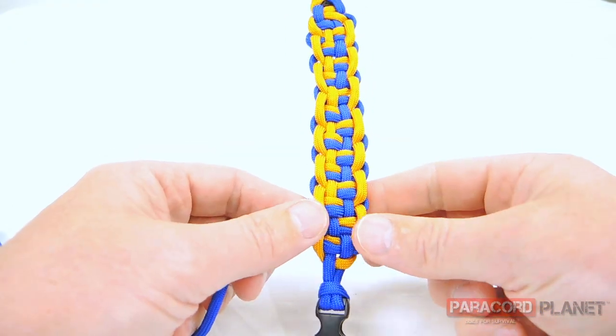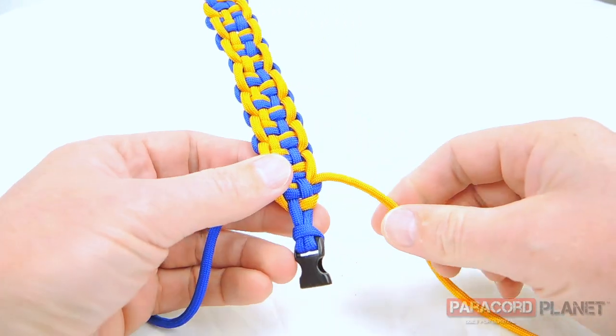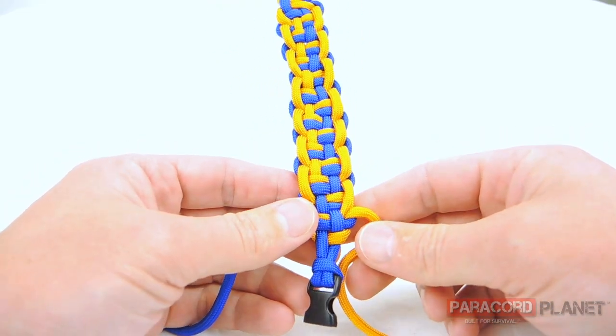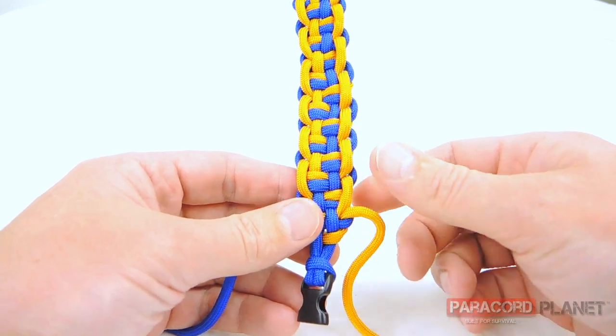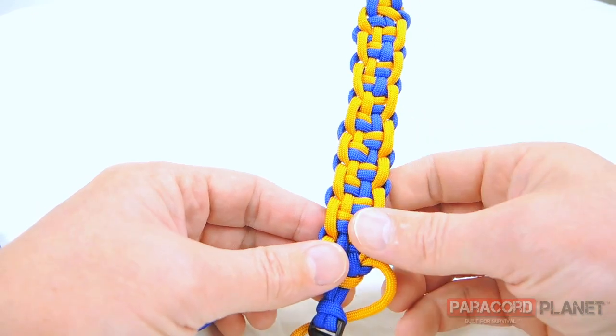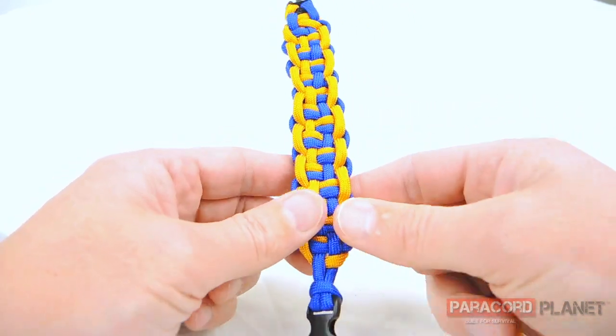So here we are at the end of our bracelet. We're going to do another Solomon just to finish it up a little bit. That way it is clean at the bottom and we can just tie it off, cut it, melt it. So here we go. This is what it looks like. Turned out pretty decent. Light colors, symmetry is pretty decent. A little bit iffy here and there, but I'll call it good.